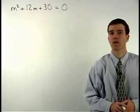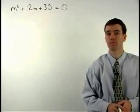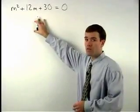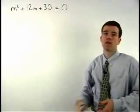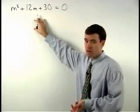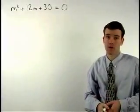To solve this equation by completing the square, we need a perfect square trinomial on the left side of the equation. Notice that the trinomial we have doesn't even factor, so we know it's not a perfect square trinomial.